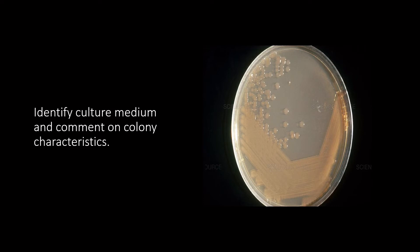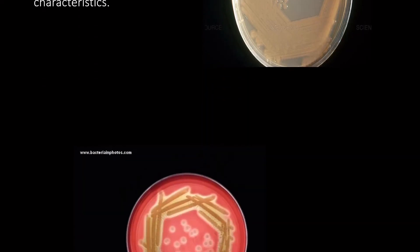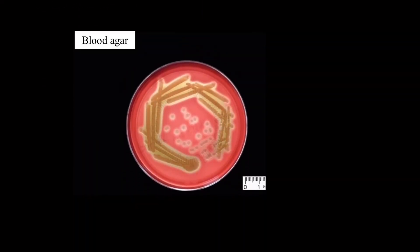From its appearance, the given culture medium can be identified as nutrient agar. We can see glistening and translucent colonies on the agar plate. In the given culture plate, a greenish clearing can be seen around the main inoculum, which indicates that the organism is capable of lysing the blood cells through its metabolic products.